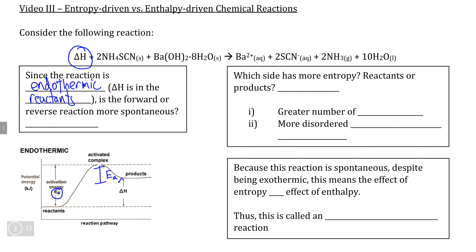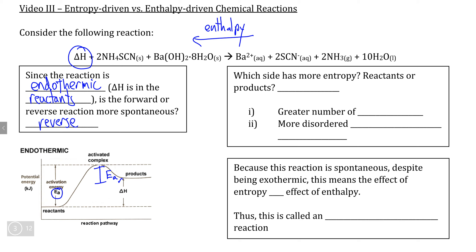Therefore the reaction is more likely to be spontaneous in the reverse direction. What this means in terms of enthalpy is that the tendency to favor a more stable, lower potential energy form means enthalpy is pushing this reaction in the reverse direction.